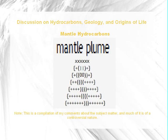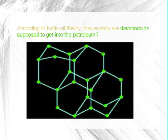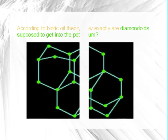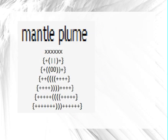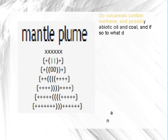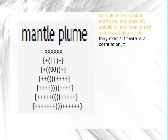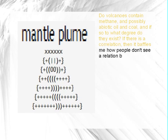According to biotic oil theory, how exactly are diamondoids supposed to get into the petroleum? Do volcanoes contain methane and possibly abiotic oil and coal, and if so to what degree? If there is a correlation, it baffles me how people don't see a relation between volcanic activities and bitumen.